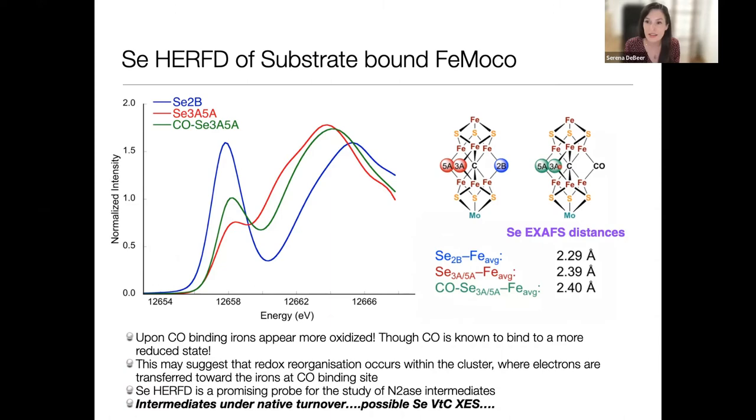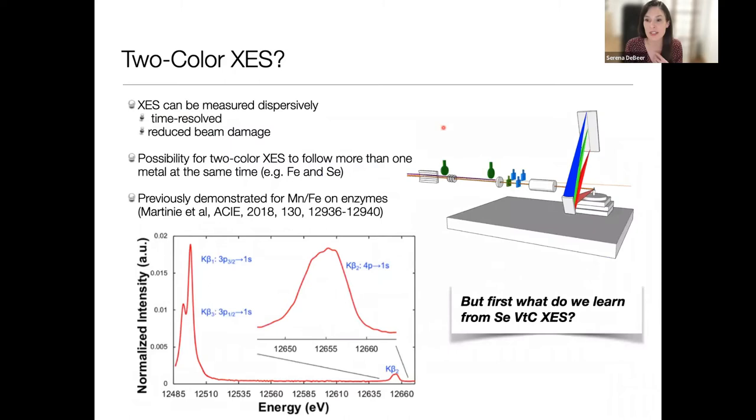But we believe this happens because in order to bind CO, these irons need to be more reduced. Maybe what's happening during turnover is you're getting redox reorganization in the cluster. Maybe the purpose of the carbide is to allow for this facile redox reorganization. It's very covalent, and that probably makes it easy to push irons to another phase to allow for that binding. Definitely selenium HERFD is a great way to look at this. These are all scanning experiments though. We obviously also like doing X-ray emission. One experiment that's appealing is can we think about doing a possible two-color emission looking at selenium and iron. This is an experiment we haven't done yet.